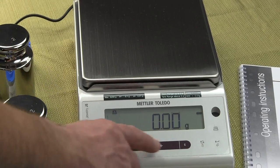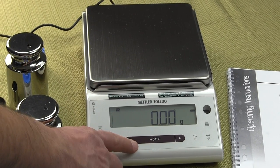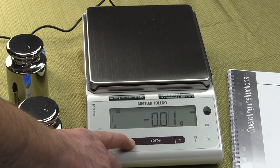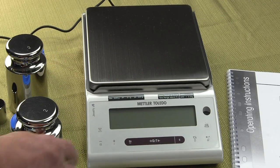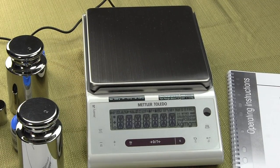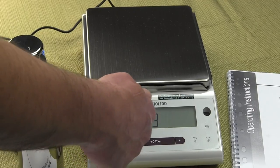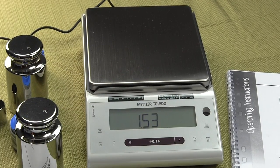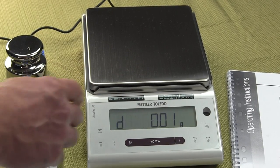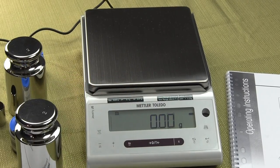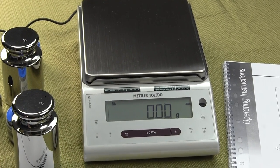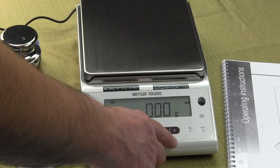This is the on off. If you press this and hold it down, the balance shuts off. Turn it back on. Each time you turn on the balance, it goes through the power up sequence, shows you the software revision that you have, tells you the maximum capacity, also the readability, and then goes to 00. The C is your clear function.